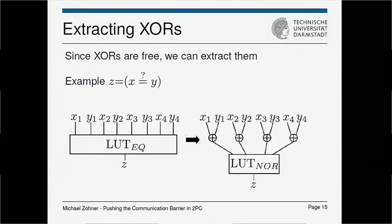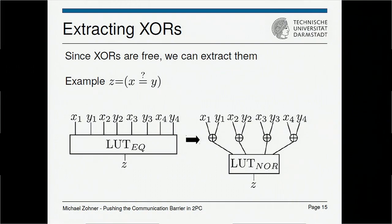A second post-processing step is extracting XOR gates. Similar to Yao's Garbled Circuits and GMW, we can evaluate XOR gates for free — extracting them out of the lookup tables and performing XOR operations locally. This yields lookup tables with a smaller number of inputs that are more efficient to evaluate.